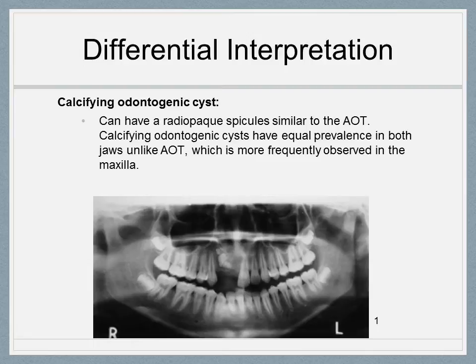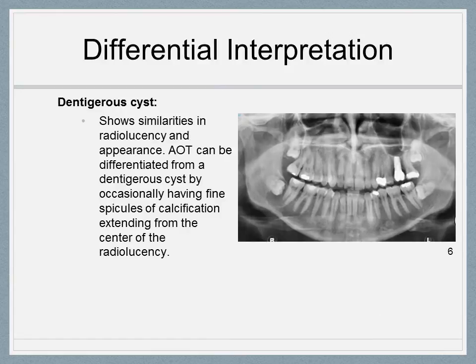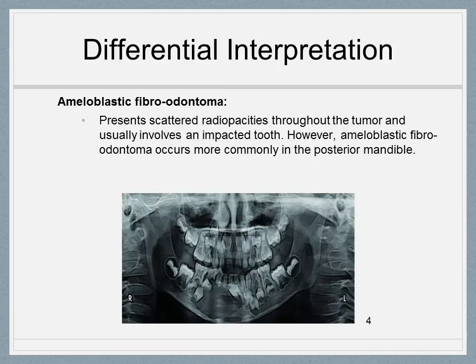However, calcifying odontogenic cysts have an equal prevalence in both jaws, unlike the AOT which is seen more frequently in the maxilla. In some instances, a calcifying odontogenic cyst will have an ill-defined border, unlike an adenomatoid odontogenic tumor. A dentigerous cyst is also a differential for an AOT due to its similarities in radiolucency and unilocular appearance. Both entities are associated with an impacted tooth. AOT can be differentiated from a dentigerous cyst by occasionally having fine spicules of calcification extending from the center of the radiolucency.